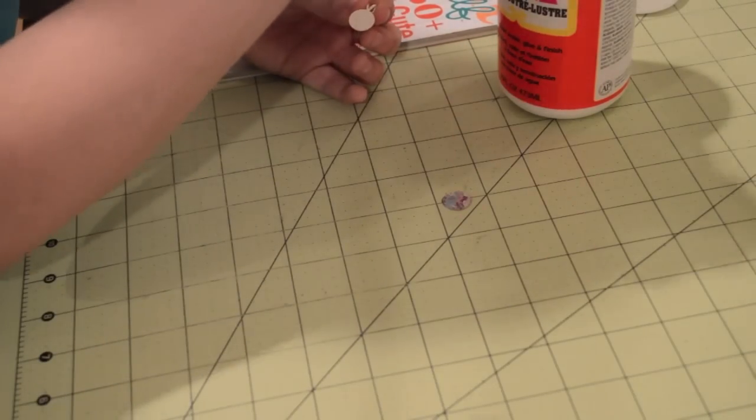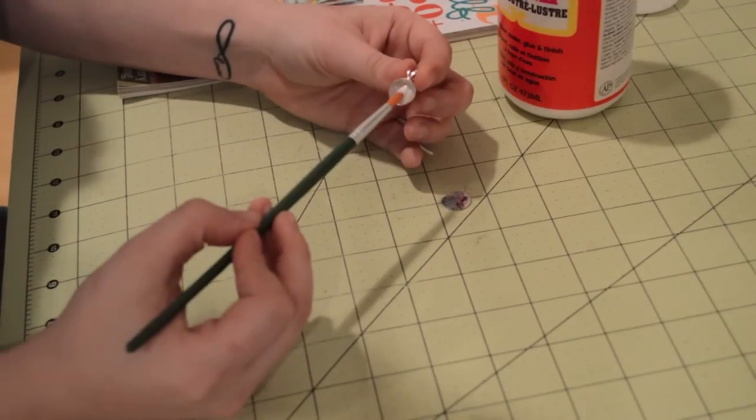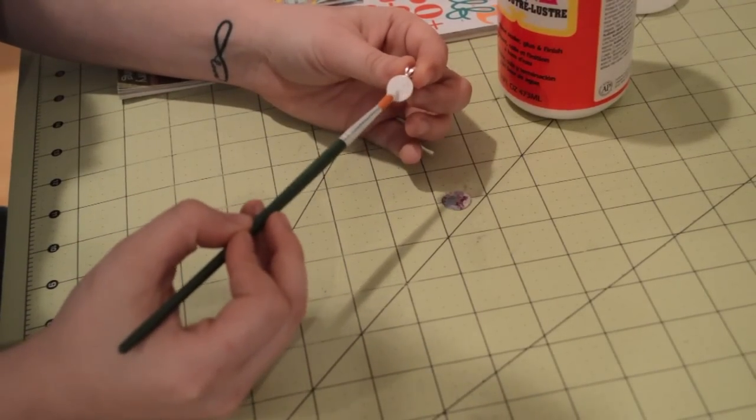Second, dip your paintbrush into some Mod Podge and apply directly to the bale plate. Make sure you're using the flat side.